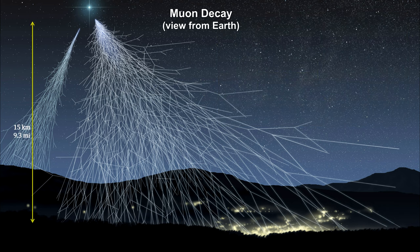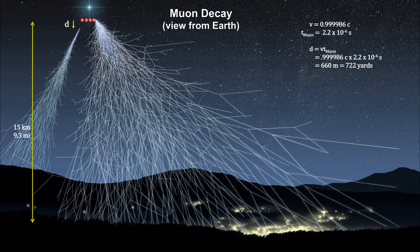Traveling at near the speed of light, half the muons would decay with each 660 meters traveled.